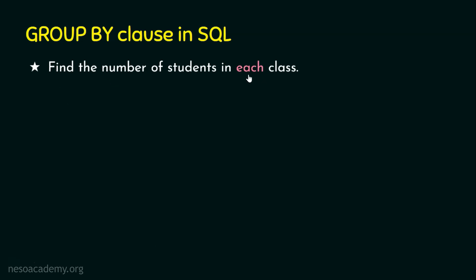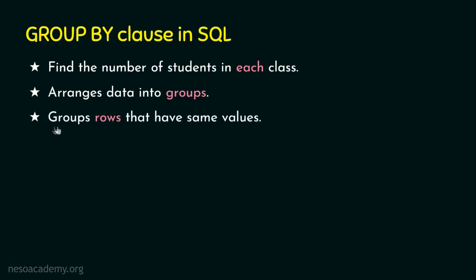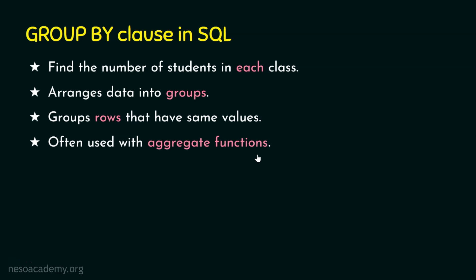In simple terms, if we want to find the number of students in each class, we can use GROUP BY. It arranges the data into groups — for example, if a table has five different departments, GROUP BY retrieves data department by department. GROUP BY groups rows that have the same values, and it is often used together with aggregate functions, which we covered in the previous lecture.